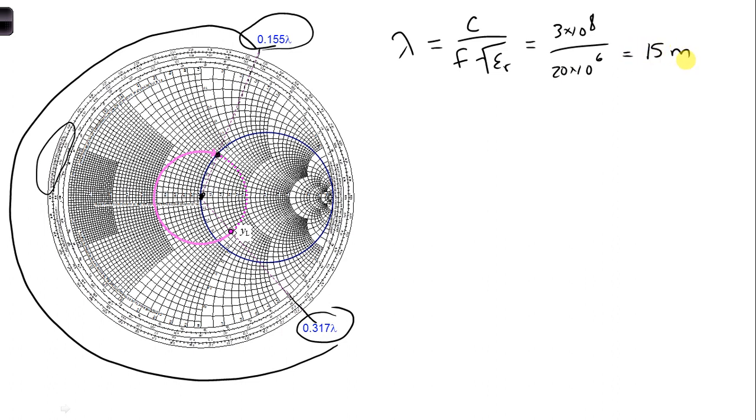So now we need to know how many wavelengths we need to move down the transmission line from the load. So here we are at the load, ZL, and we need to rotate to this distance D. And this is where we're going to stop, is when we're right here, where the real part is equal to 1, and the imaginary part, we're going to add an inductor here. And we'll find out what inductance value we need to add.